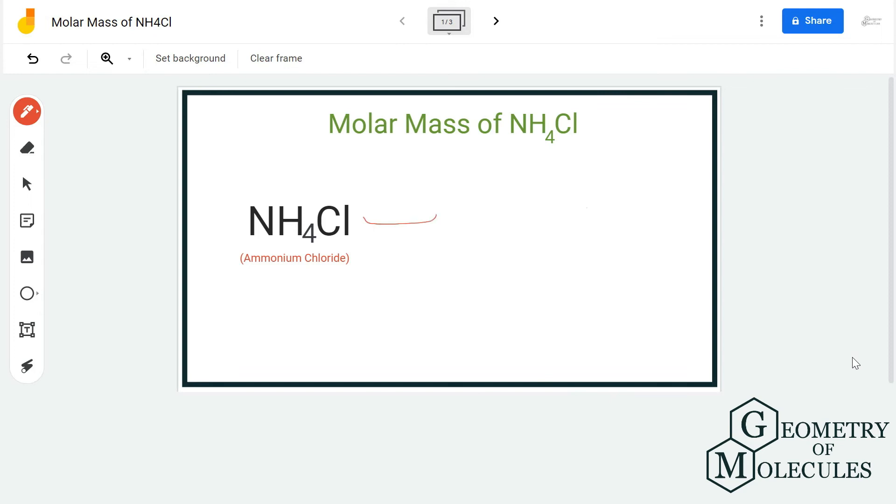If I have one mole of NH4Cl, this will be the value for it—it will weigh 53.50 grams per mole.